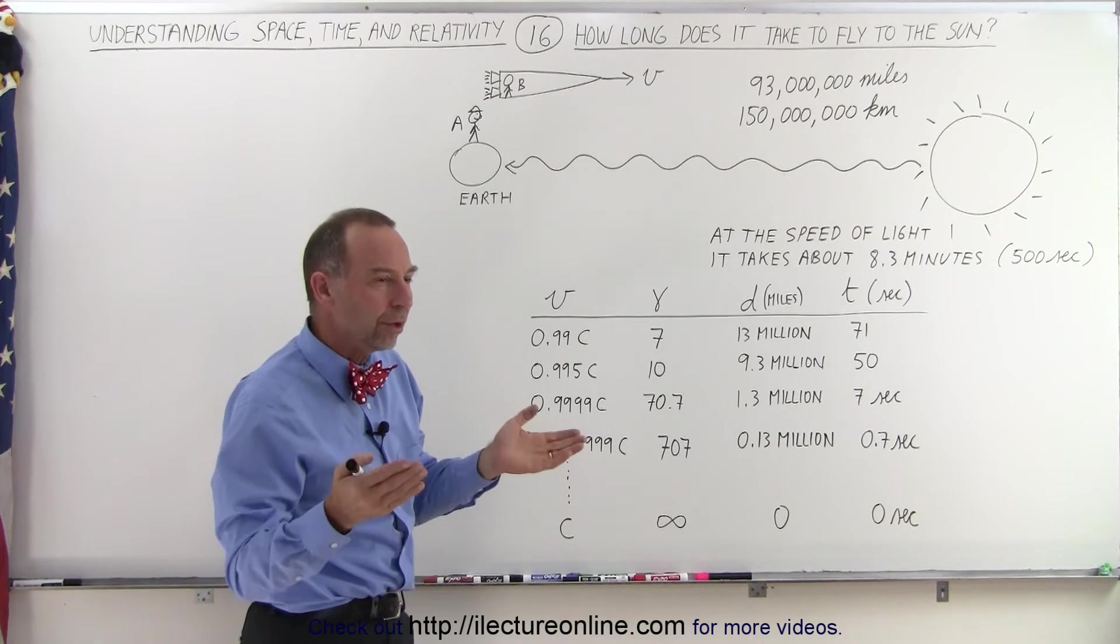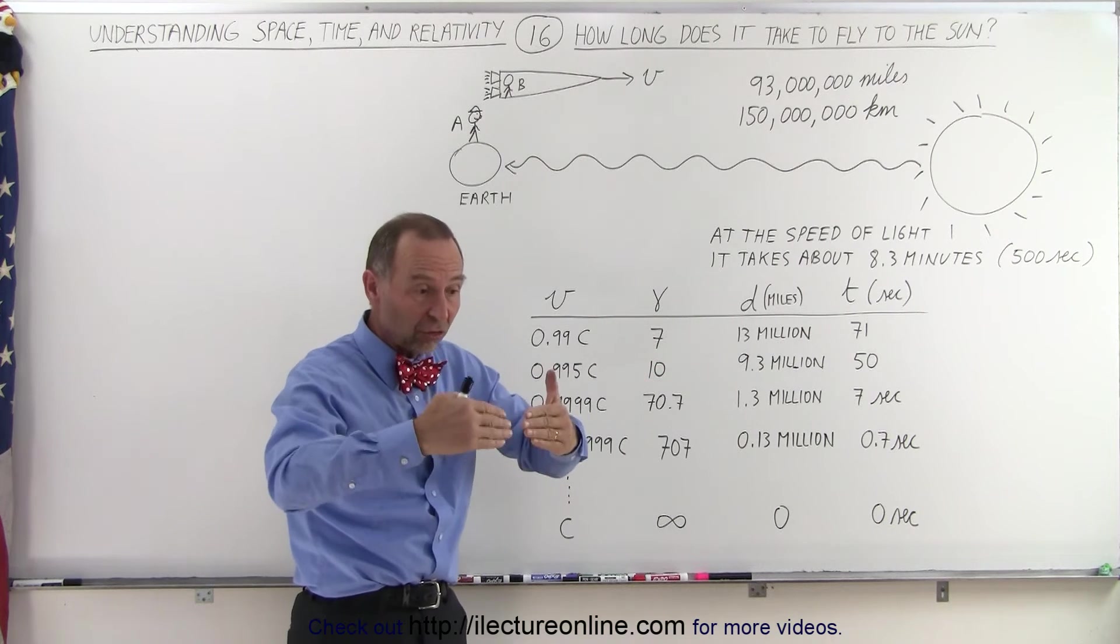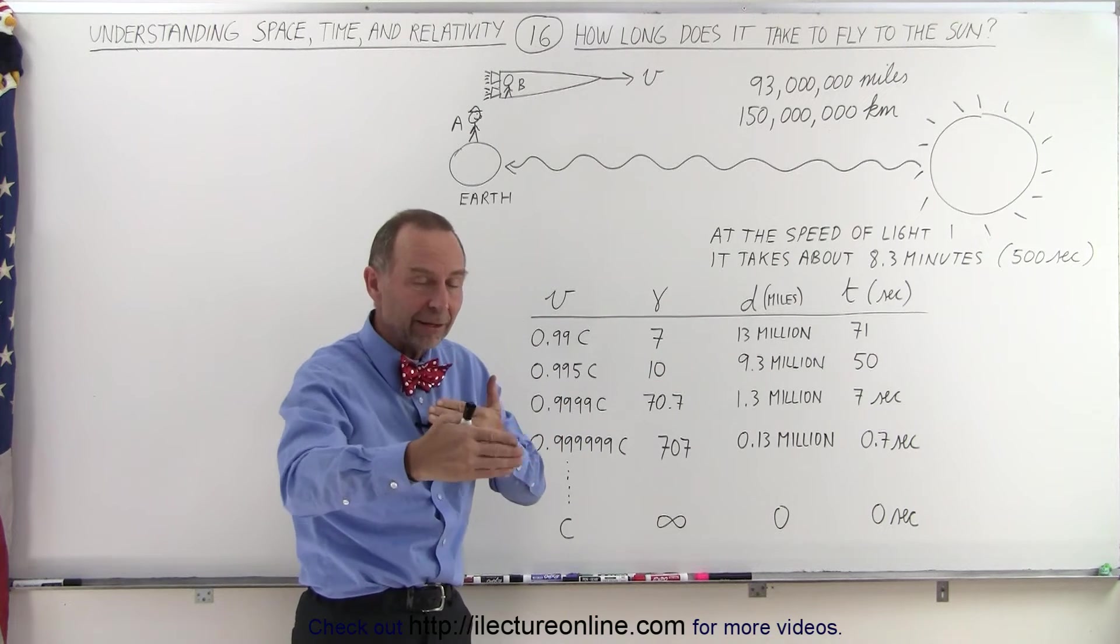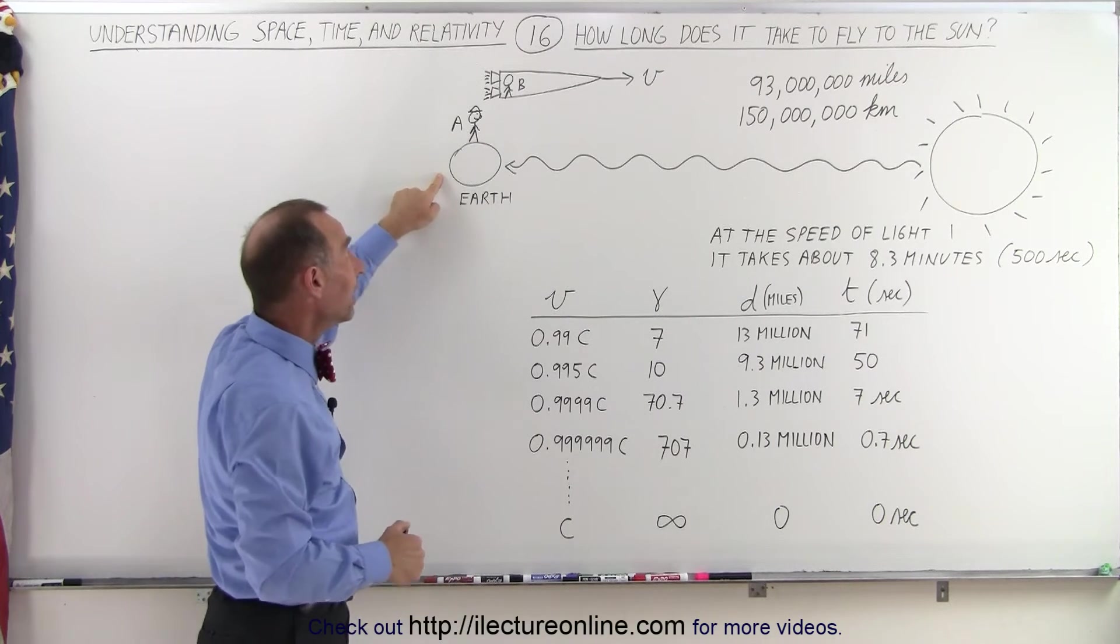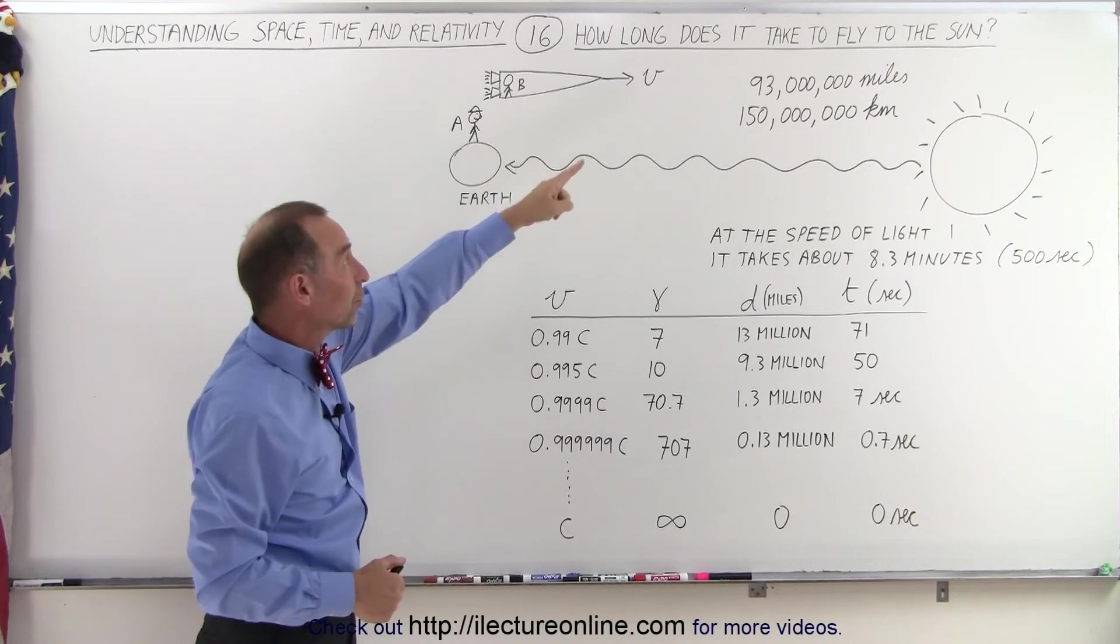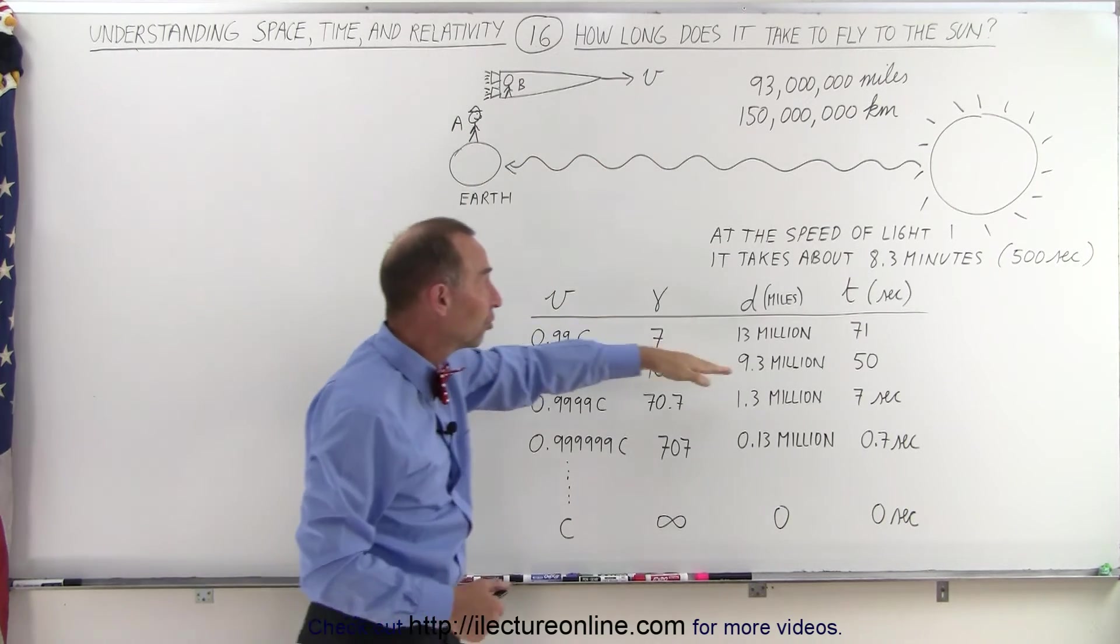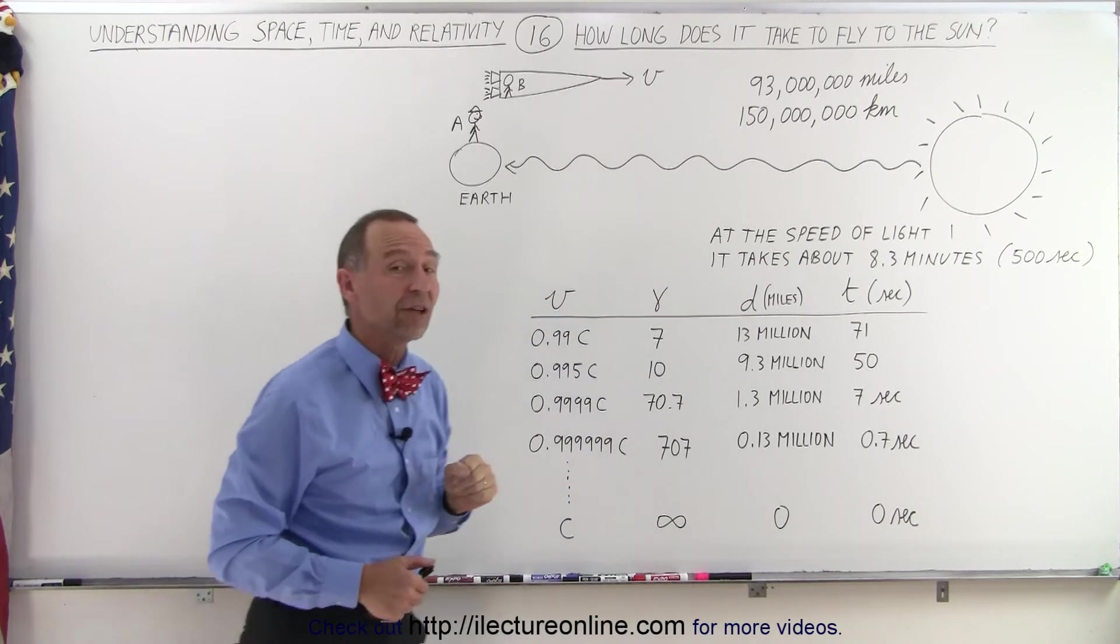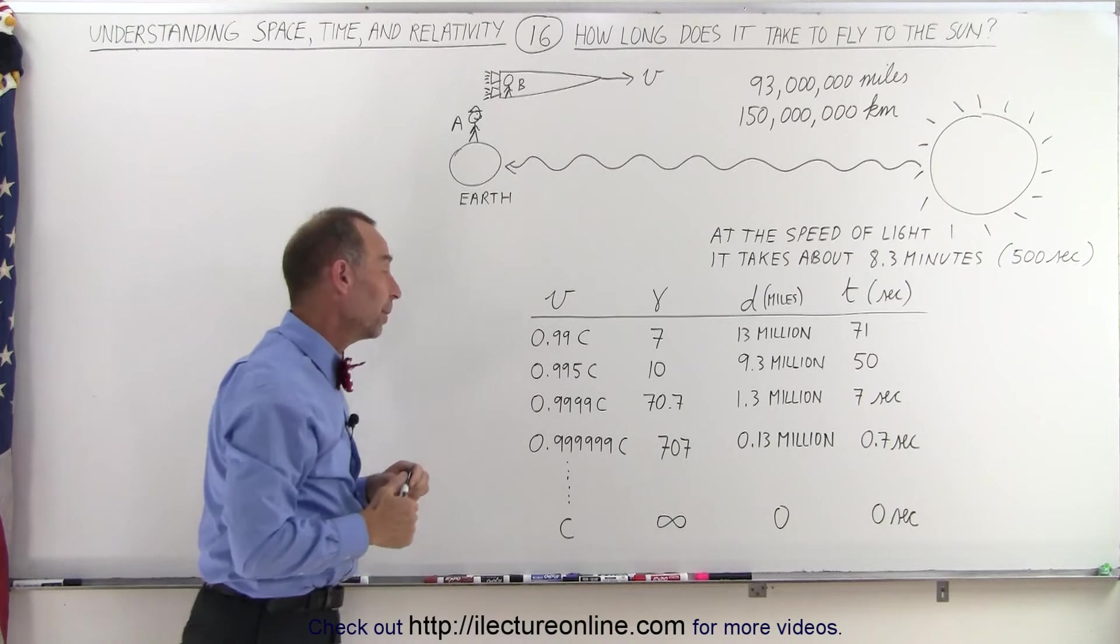So one of the ways you can look at it is, since distance shrinks, it only takes less time to get there. And that's exactly what would happen to Observer B. Now, to Observer A, the distance to the Sun would still be 93 million miles, and the time for the spaceship to reach the Sun would still be the original about 500 seconds. But that's according to Observer A, not according to Observer B.